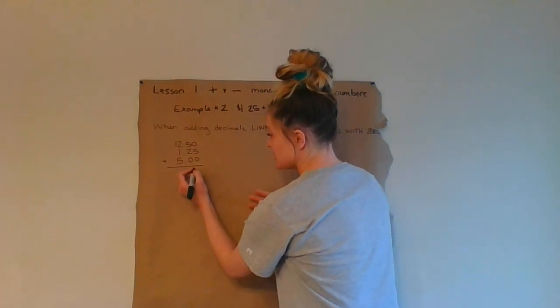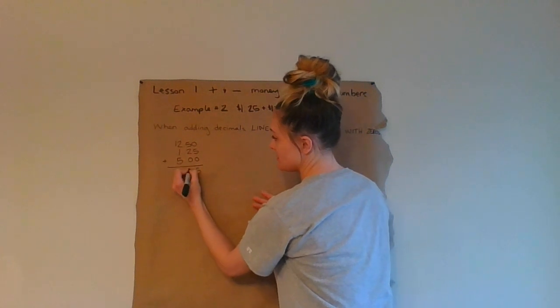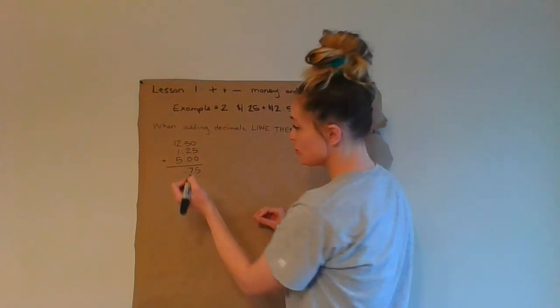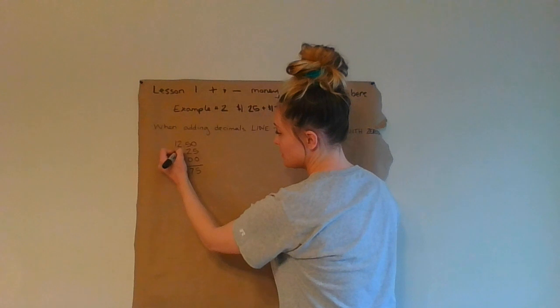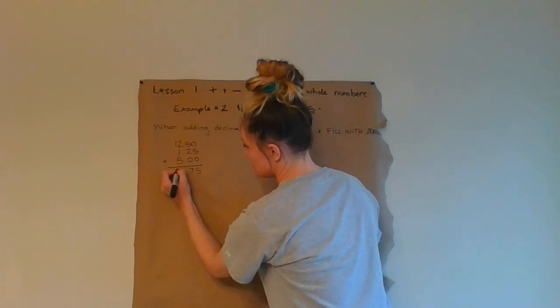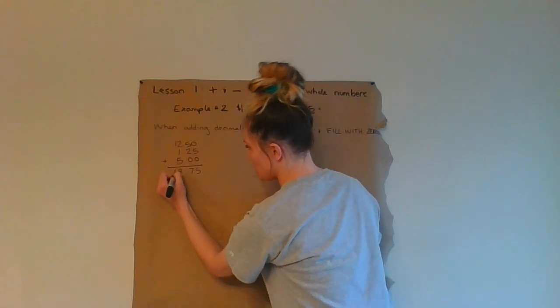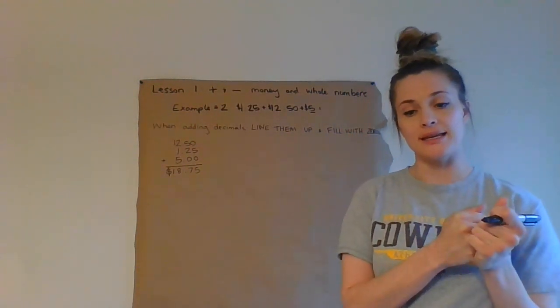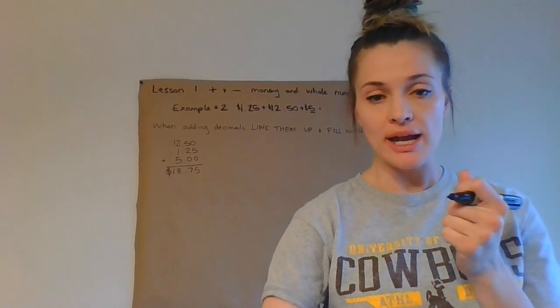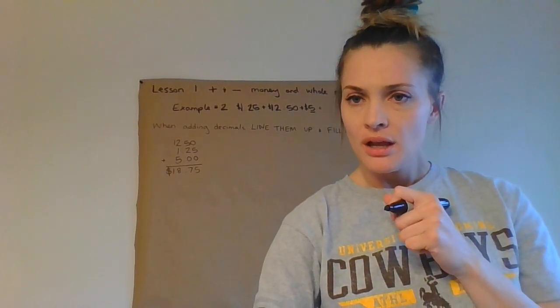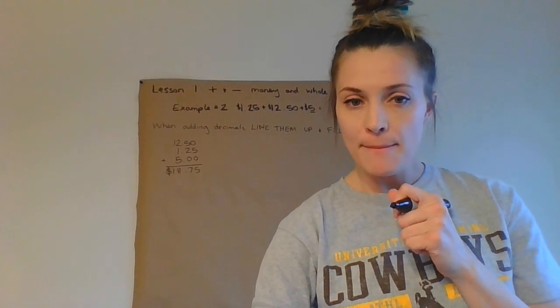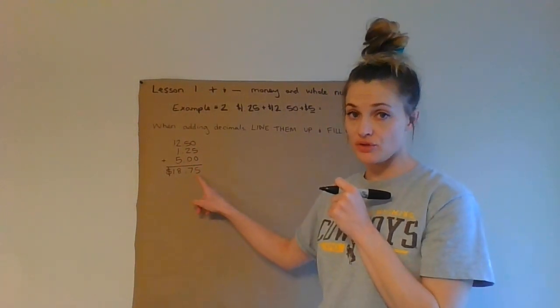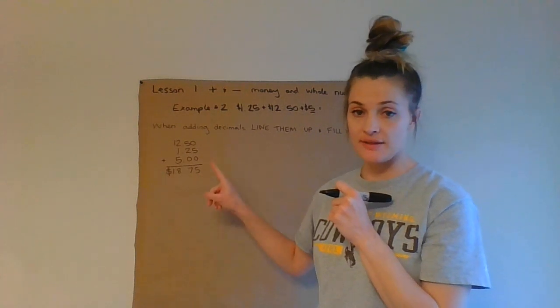Zero plus five plus zero is five. Five plus two plus zero is seven. I'm going to bring my decimal straight down. I'm going to have two plus one plus five is eight, and one. And then I'm going to finish it by adding a dollar sign because that is, we're looking for money. We've got to label it, right? So if we look at our lesson number one, example number two, our answer should be the same as in our instructions, which is $18.75.